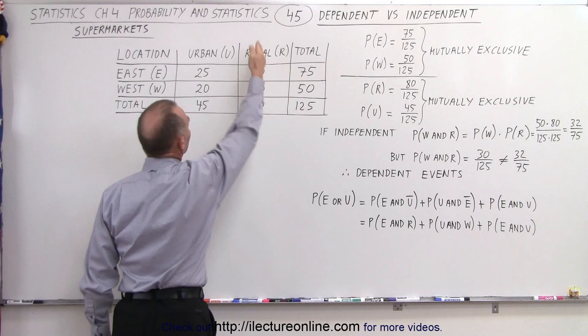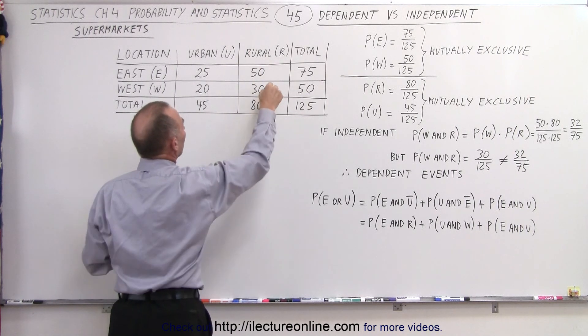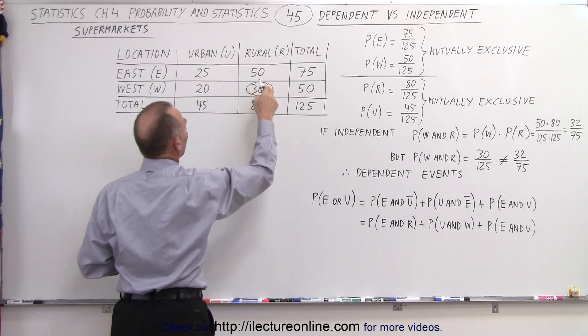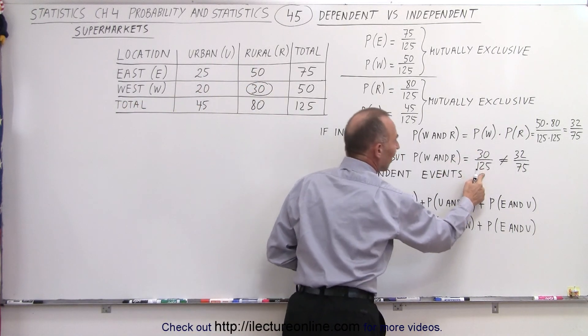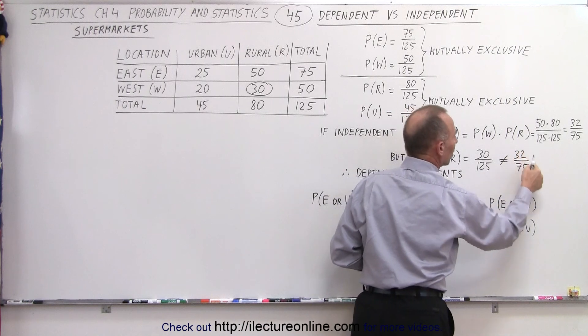Here we have west and here we have rural, so that means that we look at this number right here. These are the supermarkets that are both in the west and rural, that's 30 out of 125, which is not equal to 32 over 75.